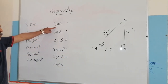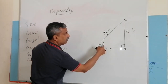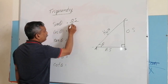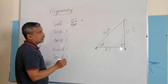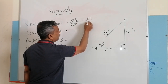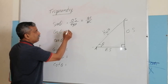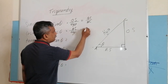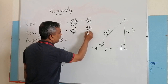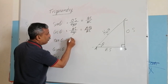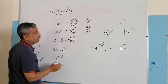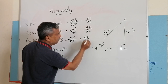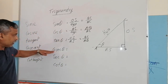The first one, sine theta, is defined as the opposite side of the angle theta divided by the hypotenuse. In terms of the sides of this triangle, sine theta is BC divided by AC.